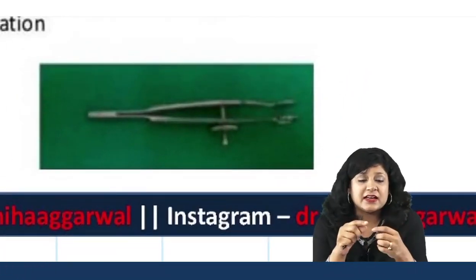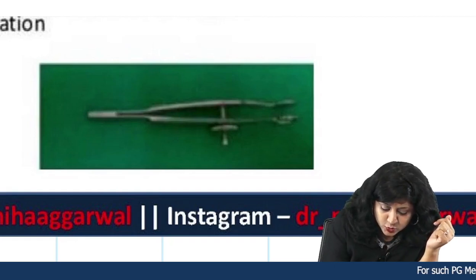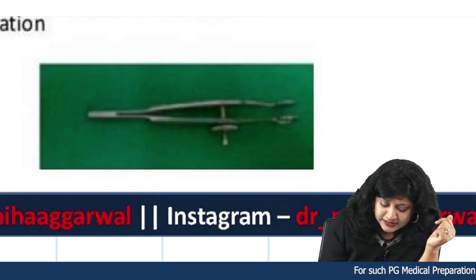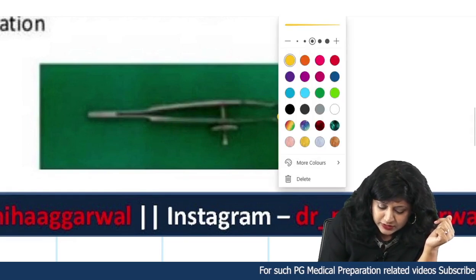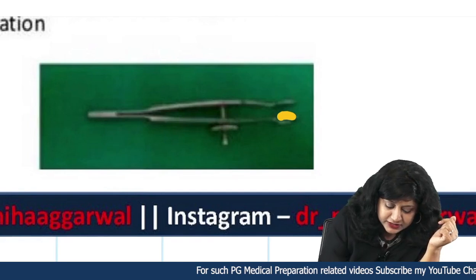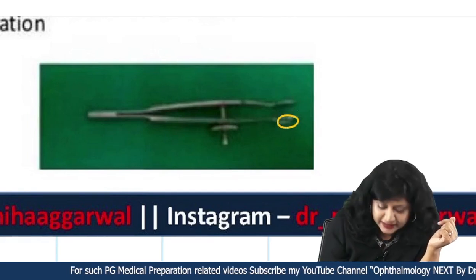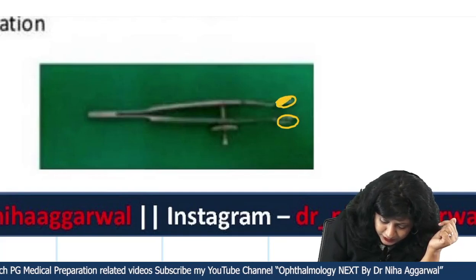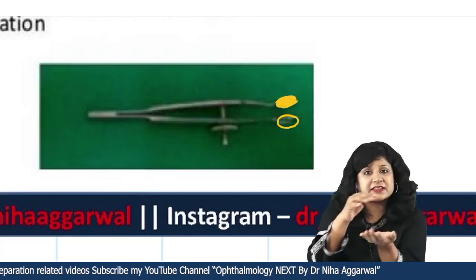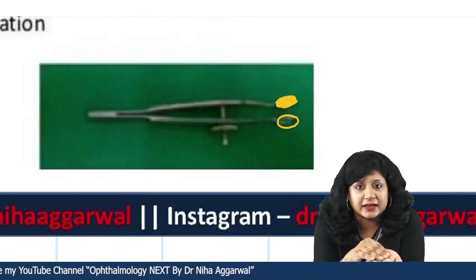Along with this forceps-like thing, it has got two rings. If you look at these rings, one is a hollow circular ring while another is a solid one — a disc kind of a thing — and the other is your hollow ring.